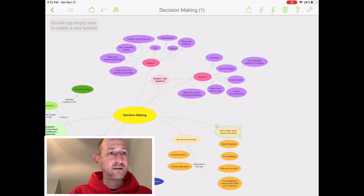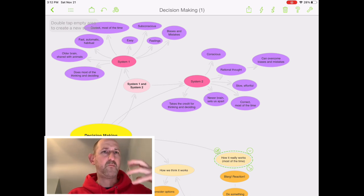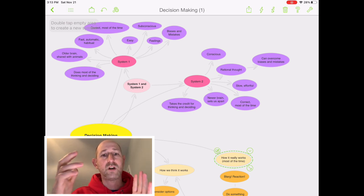All right, so that is the idea, the main idea between System 1 and System 2 and how we think decision-making works versus how it actually works. And if there's one thing that you take out of this course, hopefully it's System 1: fast, automatic, easy, subconscious, based on feelings and emotions, full of biases and mistakes, versus System 2: slow, effortful, thoughtful, rational, conscious. All right, and so those are the two to keep in mind, System 1 versus System 2.